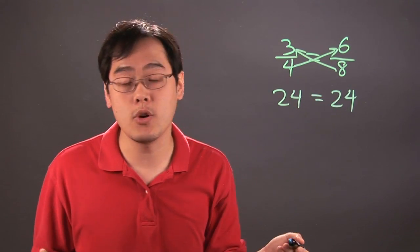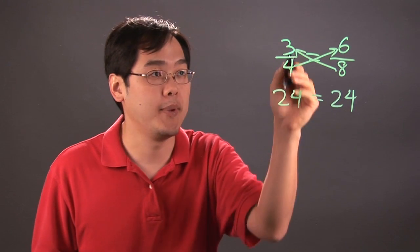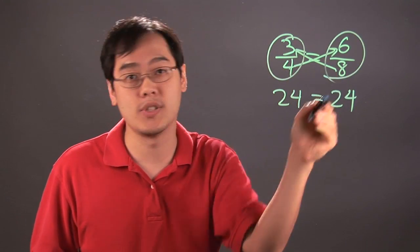And you can tell both numbers are equal. If the numbers on both sides are equal, that means the fractions are equivalent. So that means 3 fourths is equal to 6 eighths.